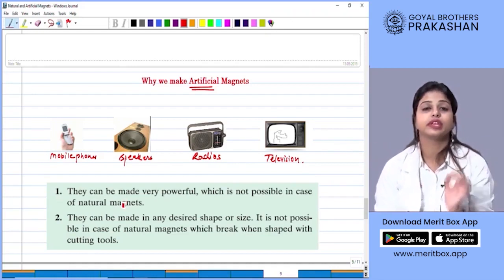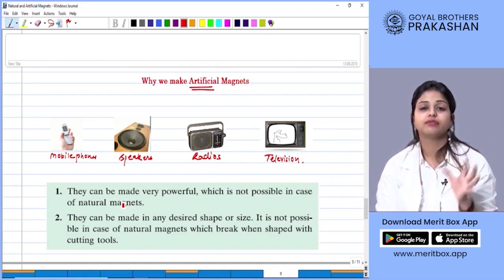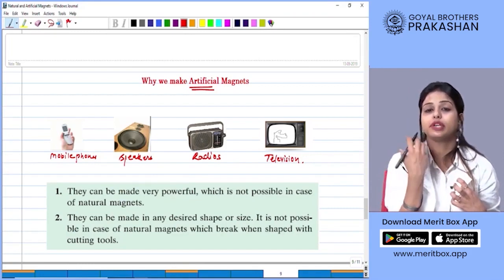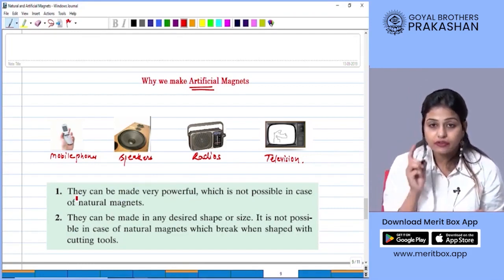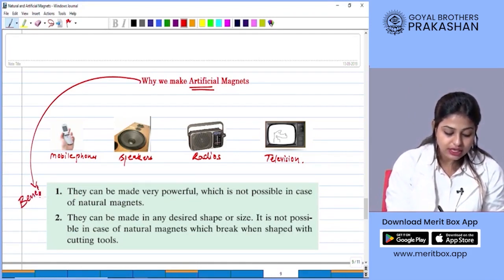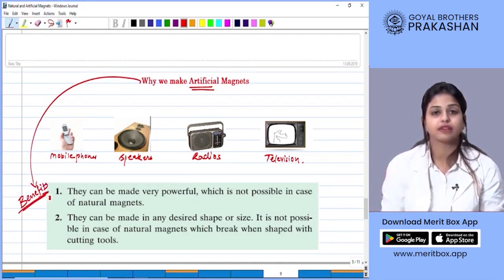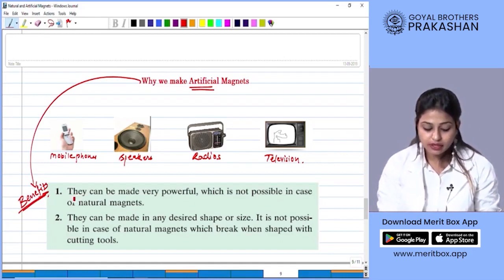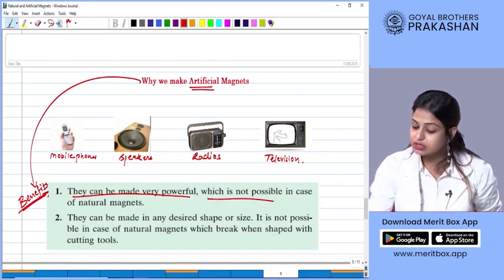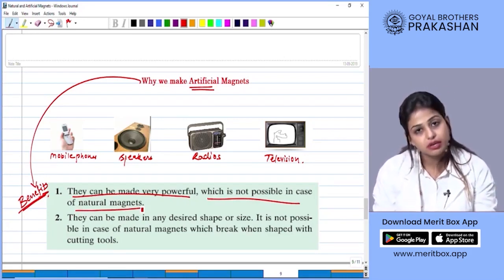They can be made very powerful. Now when we make a magnet, we can decide how powerful it should be. So artificial magnets have some benefits. These are the benefits of making artificial magnets. One, they can be made very powerful which is not possible in the case of natural magnets.